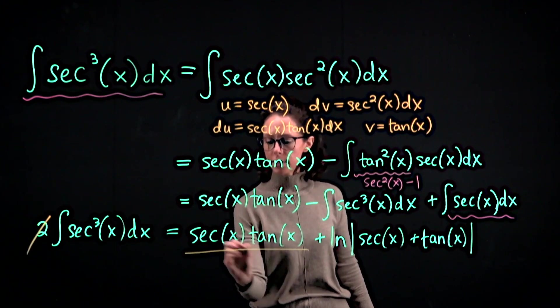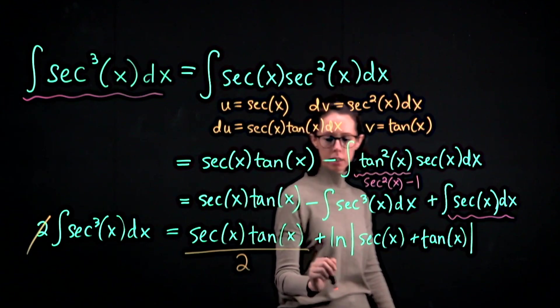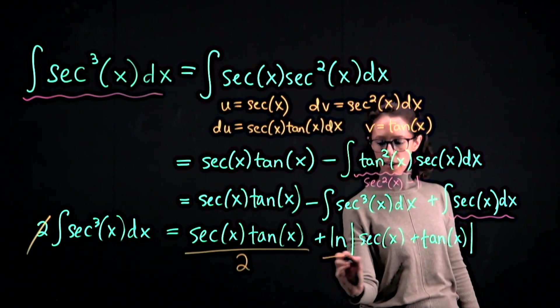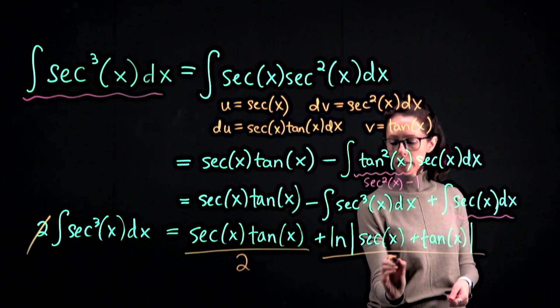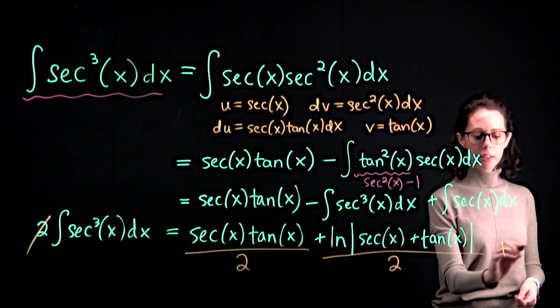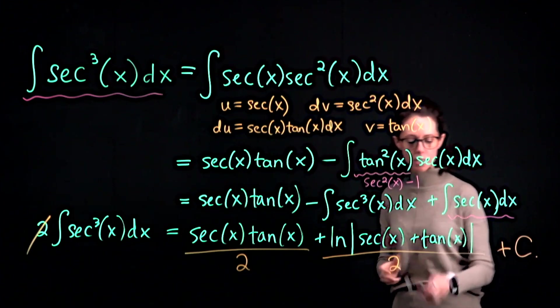So it's the product of secant and tangent divided by two, plus the natural log of the absolute value of secant of x plus tangent of x, divided by two. And then I will add the constant of integration because this was an indefinite integral.